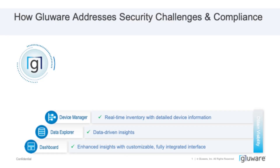The first area where Glueware helps customers from a security perspective is obtaining visibility into their environment. As any security practitioner knows, visibility is crucial to understanding your security posture. If you don't know what's inside of your environment, you're not going to be able to secure it, and you're not going to understand what risks might be there. There are three specific applications that help obtain visibility.